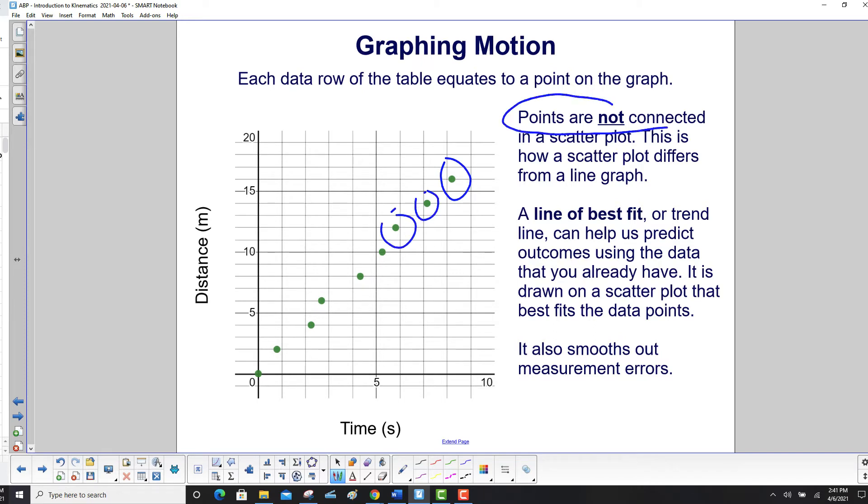Very important, points are not connected in a scatterplot. This is how a scatterplot differs from a line graph. However, we will use a line of best fit or trend line. That can help us predict outcomes using the data that you already have. It is drawn on the scatterplot that best fits the data points. It also tends to smooth out the measurement errors that were part of any lab.